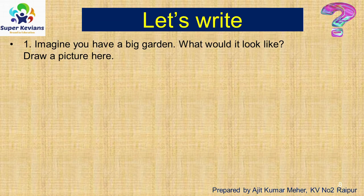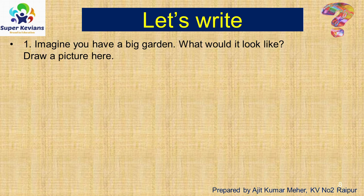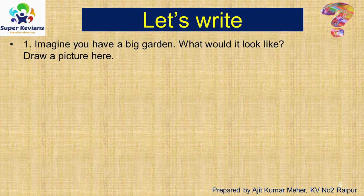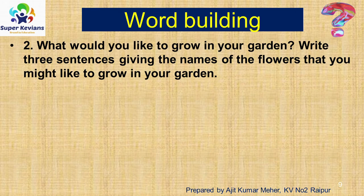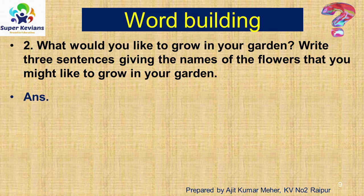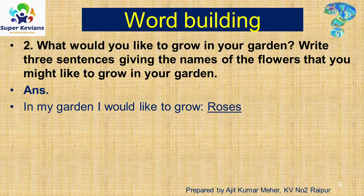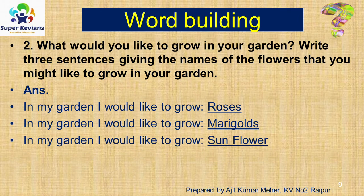The next activity: Imagine you have a big garden — what would it look like? Draw a picture by imagining your wish garden or dream garden. Here I have drawn one garden; you can draw your own designs and make it colorful. Also, write three sentences giving the names of flowers you would like to grow in your garden. In my garden, I would like to grow roses, marigolds and sunflowers. You can write your own choice of flowers.